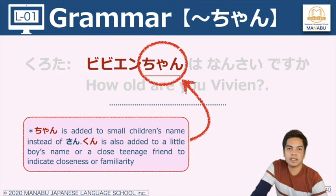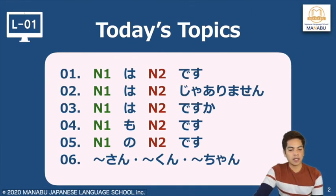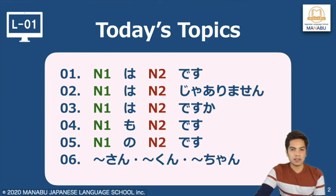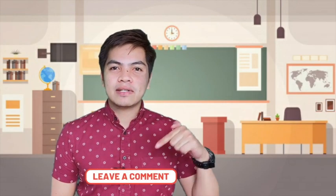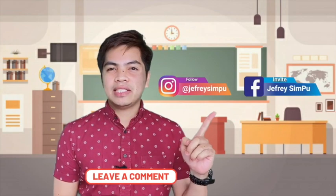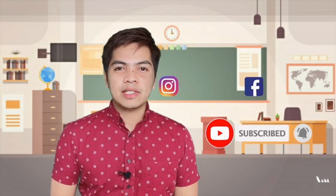Let's recap our grammar points. We learned: Noun 1 wa Noun 2 desu; Noun 1 wa Noun 2 ja arimasen; Noun 1 wa Noun 2 desu ka; Noun 1 mo Noun 2 desu; Noun 1 no Noun 2 desu; and the suffixes san, kun, and chan. I hope you learned a lot in today's lesson. If you have questions, leave a comment below. You can also follow me on Instagram. Please subscribe and hit the notification bell so you won't miss our future lessons. Dewa, mata ne. Bye bye.